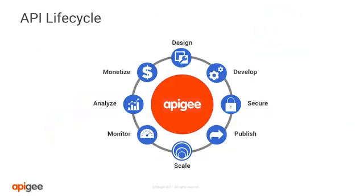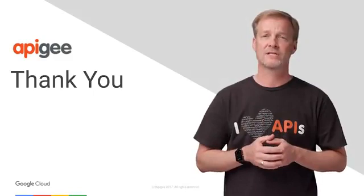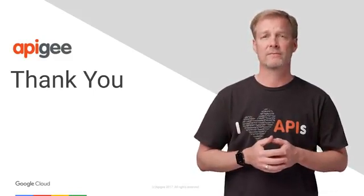Whether you're a security architect, app developer, operation engineer, or API product owner, Apigee Edge has you covered. With more than 30 pre-configured policies, the ability to use common languages like Java, JavaScript, Python, and Node.js, and built-in metrics collection and reporting, Edge offers the powerful extendability needed to build and manage every aspect of the API lifecycle. For more information on this topic, refer to our documentation. And if you have any questions, please post them on our community. Thank you.